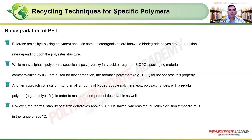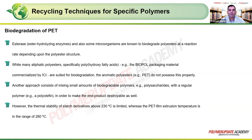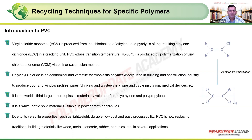Another approach involves mixing small amounts of biodegradable polymers such as polysaccharides with regular polymers to make the end product destroyable. However, only the biodegradable fraction will disintegrate, not the whole material. Additionally, the thermal stability of starch derivatives is limited to about 230°C, whereas PET processing occurs above 265–270°C, so starch added as a biodegradable component will disintegrate at these processing temperatures.